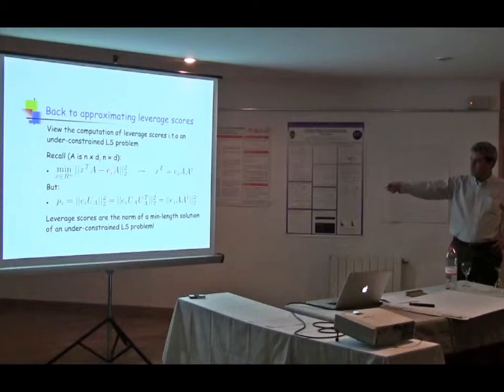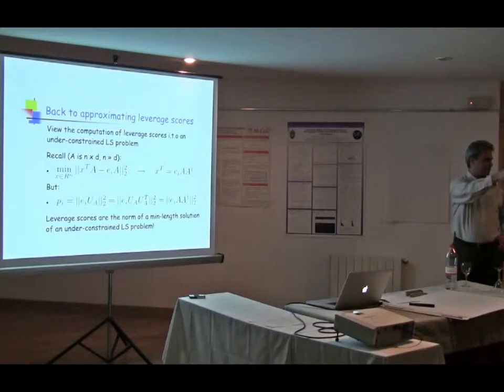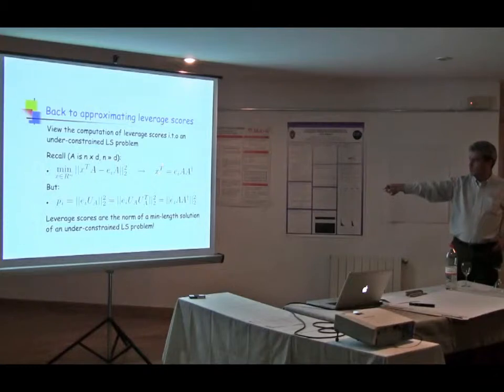Take every column of A and get the best least squares fit to the i-th column of A. Clearly there's a solution to that. You return the i-th column. That's not the best solution in Euclidean norm sense. The best solution, x transpose, is given by this EI times AA+.